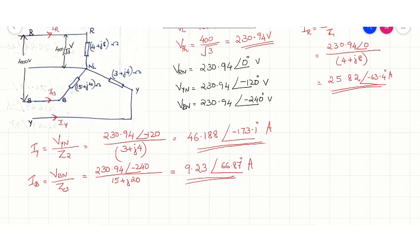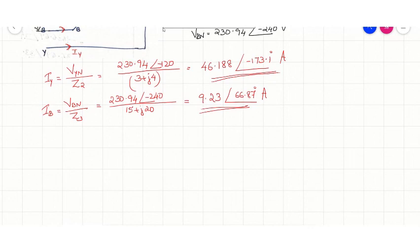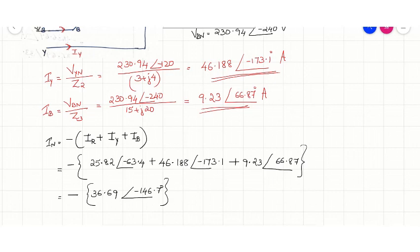Now we have to find out the neutral current IN. The expression for neutral current is IN = −(IR + IY + IB). Substituting the values for IR, IY, and IB, we get IN = −(36.69∠−146.7°) = 36.69∠33.3° amperes. This is the neutral current.